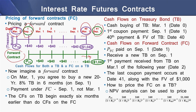Imagine a forward contract on this treasury bond where on March 1 a person agrees to buy a new 20-year, 8% treasury bond in 6 months. The payment under this forward contract is on September 1, not at March 1 (time 0). The cash flows on the treasury bond begin exactly 6 months earlier than the cash flows on the forward contract — treasury bond cash flows start at time 0, whereas forward contract cash flows start at period 1.